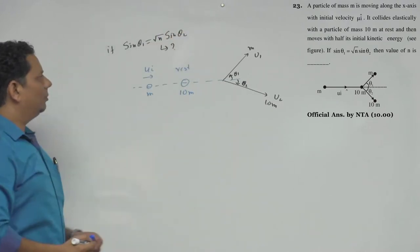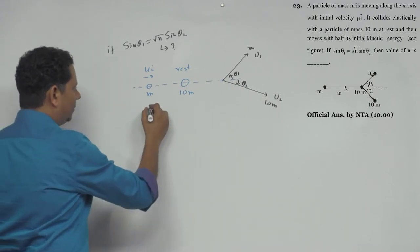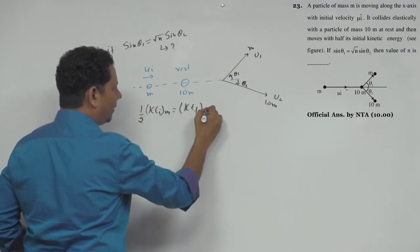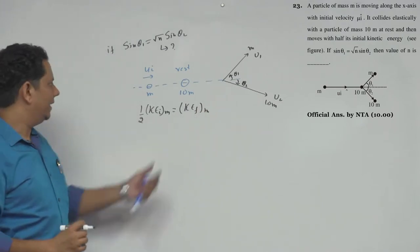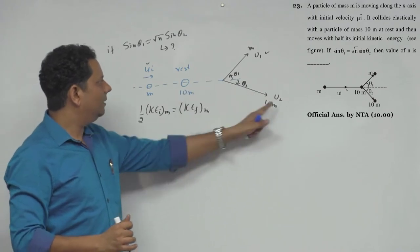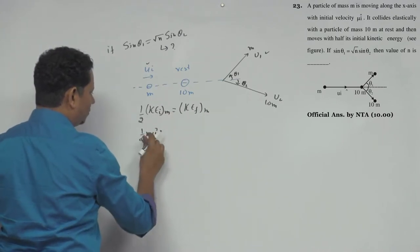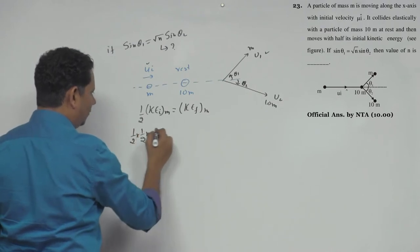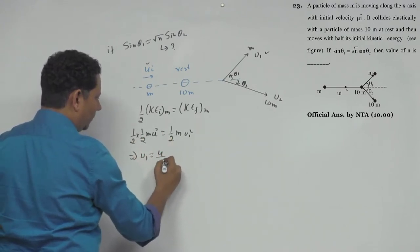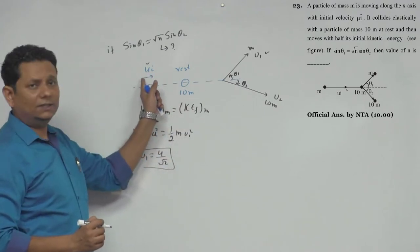First, the condition for particle m: final kinetic energy equals half the initial kinetic energy. So ½mu² × ½ = ½mv₁². Canceling ½m and the factor ½: v₁ = u/√2. So the final velocity is 1/√2 times the initial velocity.